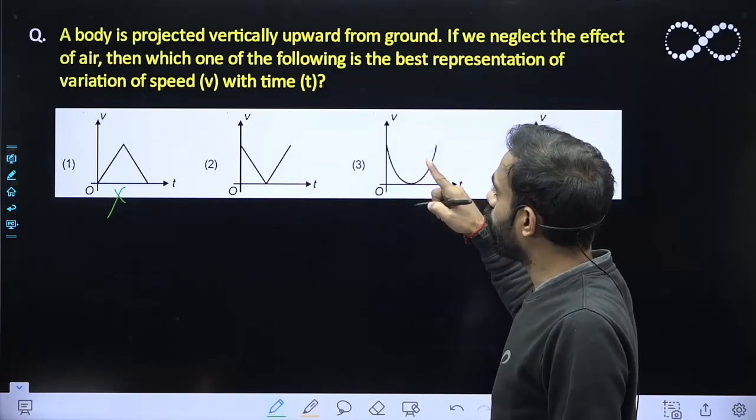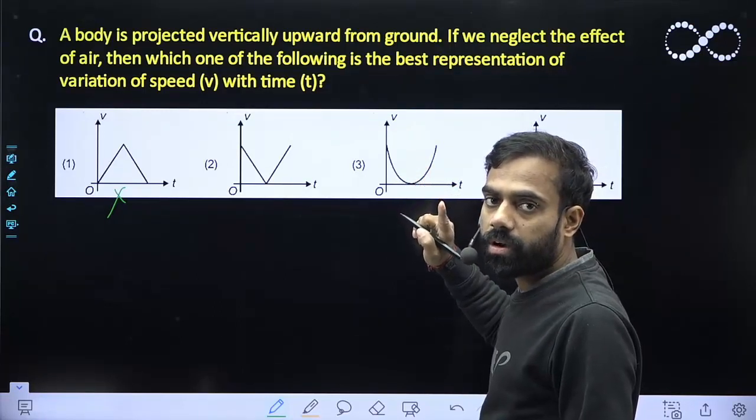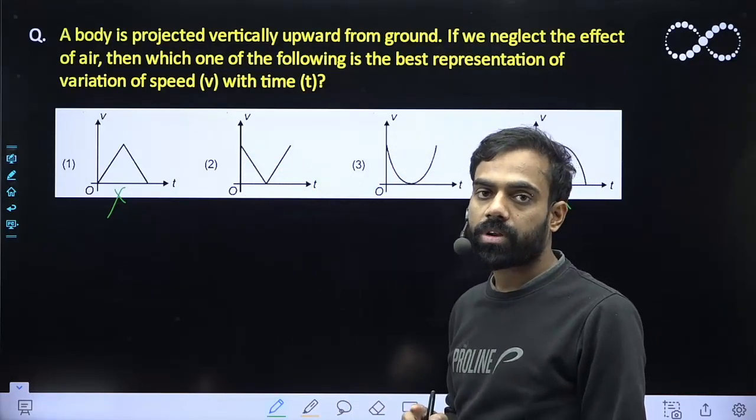Now you can see, in the case of free fall, because this is the equation of free fall, the acceleration is constant. And in the case of velocity time graph, the slope gives the acceleration.